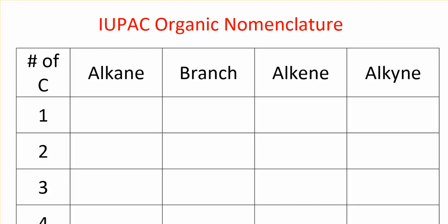Now we're ready to start learning some organic nomenclature — how we're going to name our organic compounds. IUPAC stands for International Union of Pure and Applied Chemistry. Basically there's a group of people that get together internationally and decide the naming rules for organic chemistry. We actually use the IUPAC naming rules for inorganic chemistry already, so these are the official rules and will be your foundation for all the organic nomenclature you do both in lecture and in lab.